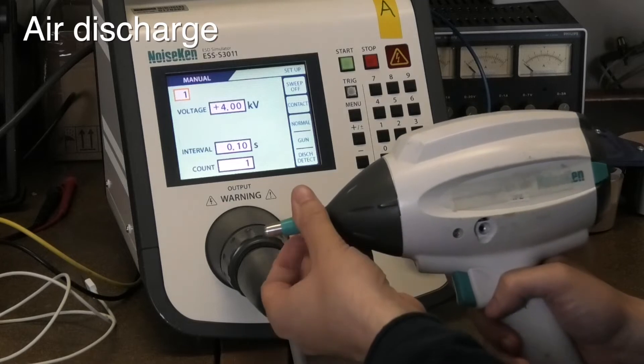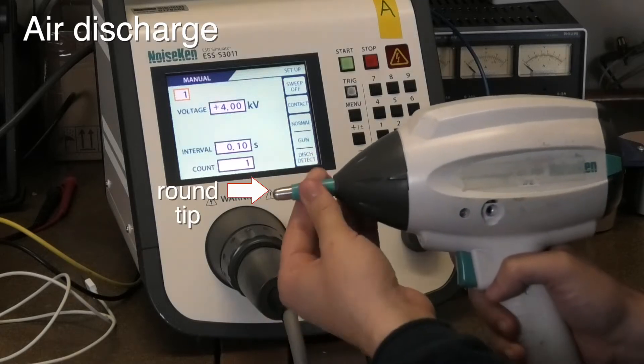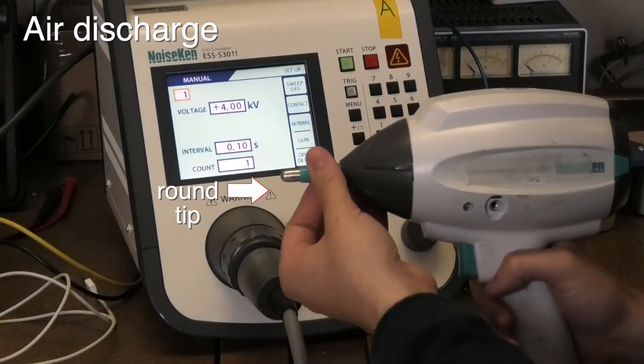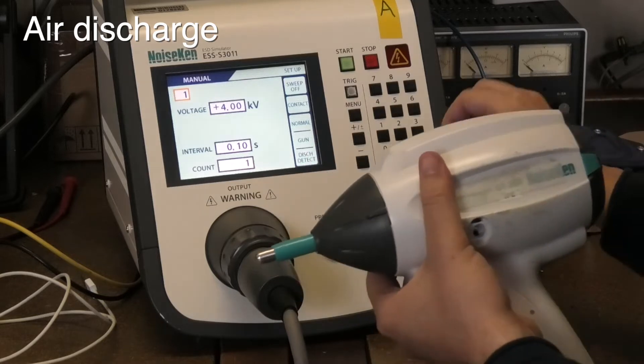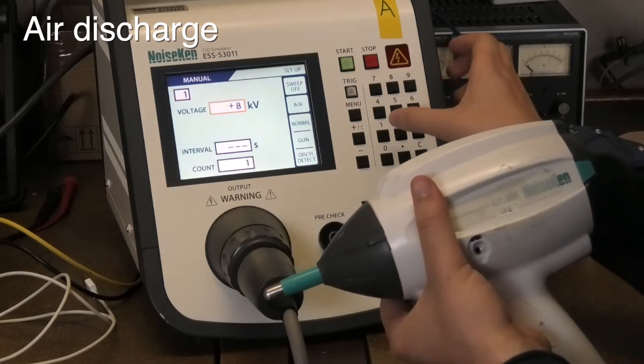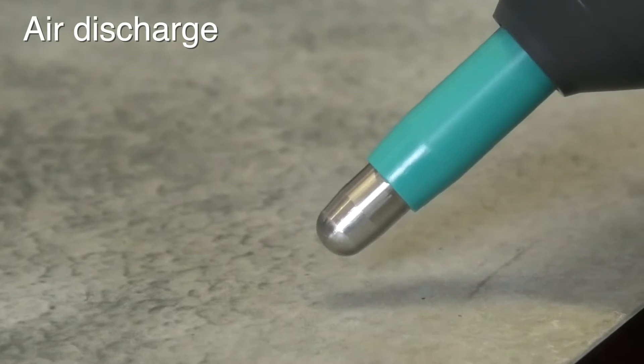Let's start with air discharges. Here we need a round tip which is simulating a fingertip. Let's choose 8 kilovolts as our test voltage. Here you can see a discharge at such voltage level.